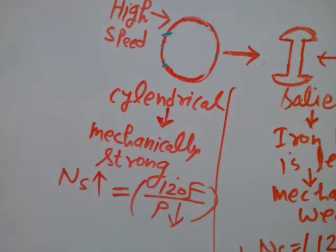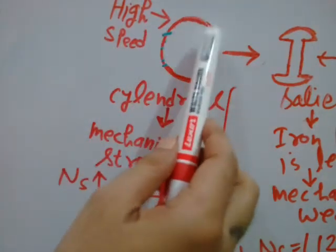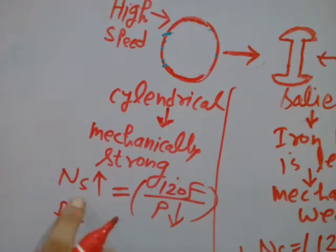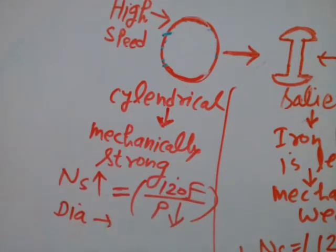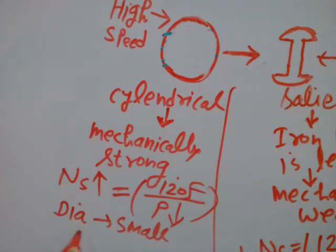If you have to design a small number of poles on the periphery, then the diameter of the rotor will be small. With a small number of poles, you have to accommodate fewer poles — that means the diameter is small, or relatively small, as compared to the salient pole rotor.